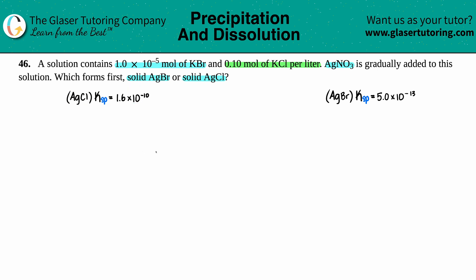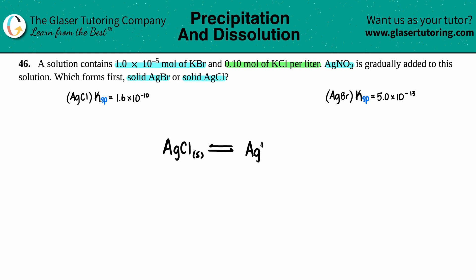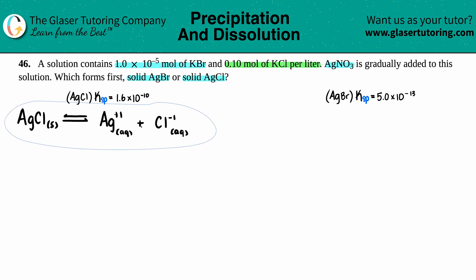Let's write out balanced equations — we'll do AgCl first. AgCl is a solid and it breaks down (double arrow) into its two ions: Cl⁻, because chloride is always a negative one, and Ag⁺, since silver is always a plus one. They're both charged so they're both aqueous. The equation is already balanced.